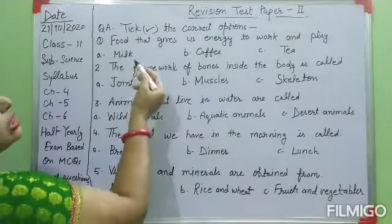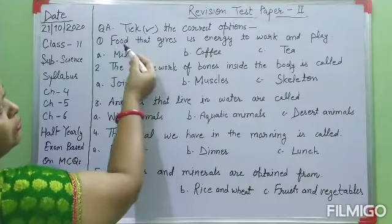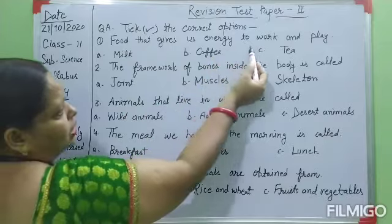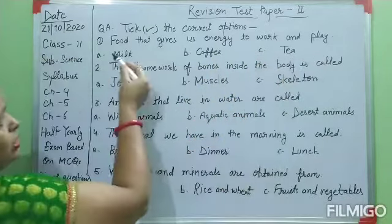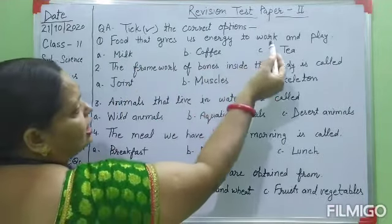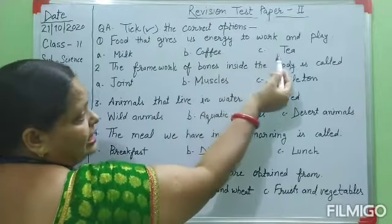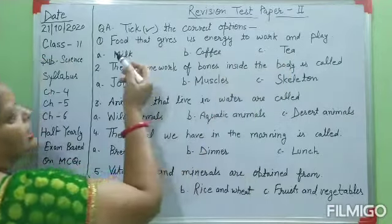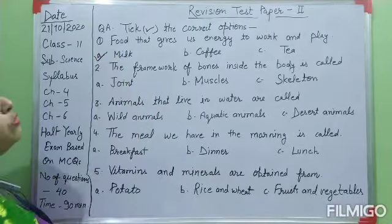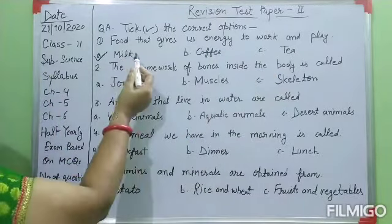Today I will give you some 'pick the correct option' questions. First question: food that gives us energy to work and play. Options are: A — milk, B — coffee, C — tea. Coffee and tea are both wrong. According to the first sentence, the right option is milk. Food that gives us energy to work and play — that is milk.